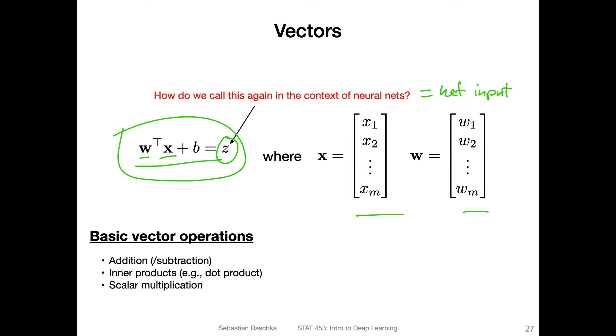In linear algebra, the supported operations for a vector: addition, you can also think of subtraction if we add a vector with negative values, and then the inner products like the dot product, and scalar multiplication. These are the only basic vector operations that you would find in a traditional linear algebra textbook.